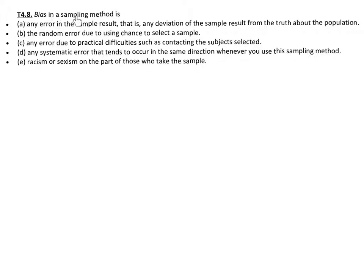Number eight, bias in sampling method is considered to be by definition letter D. It's any systematic error that tends to occur in the same direction whenever you use this sampling method. One of the things about bias, if you are doing a free response in this chapter and they ask you to explain the bias, you must say what it is and they want to know in what direction the bias happens and that is it overstating or understating your results.